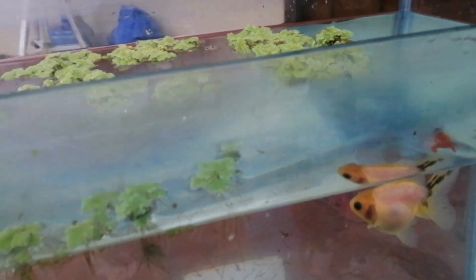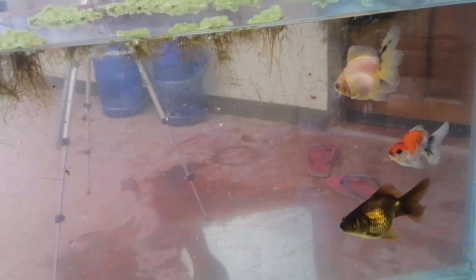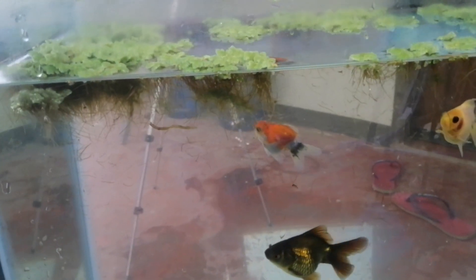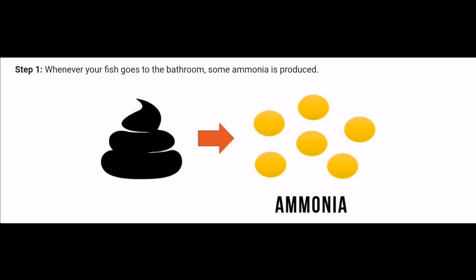Here are some illustrations on the different stages of the nitrogen cycle. In the first stage, once your fish produce waste, it also produces some ammonia. Keep in mind that high levels of ammonia can be poisonous to your fish.